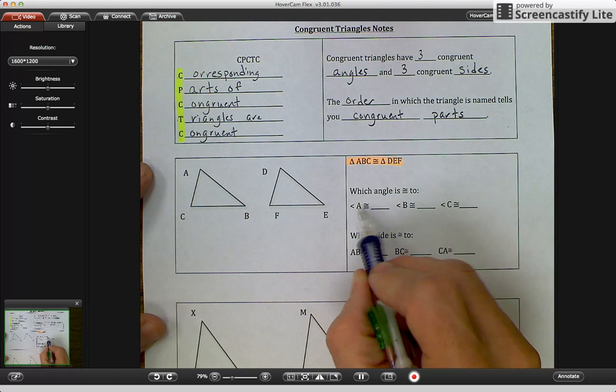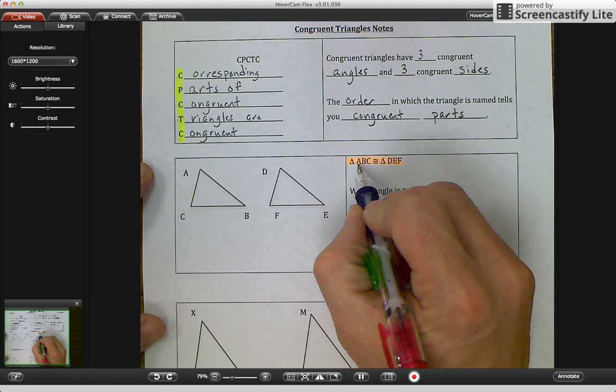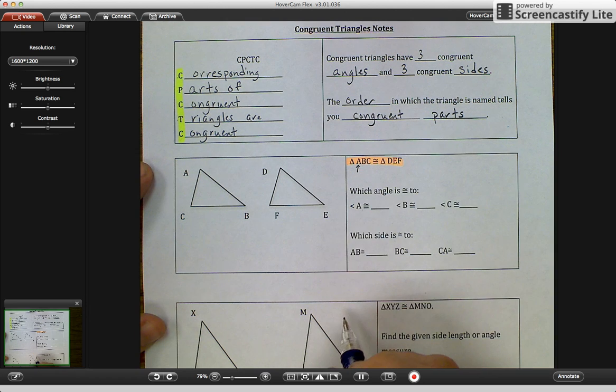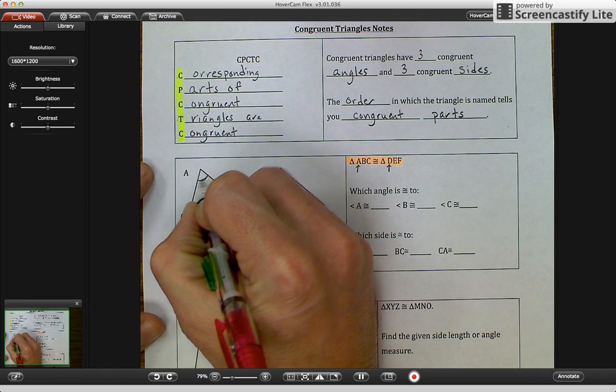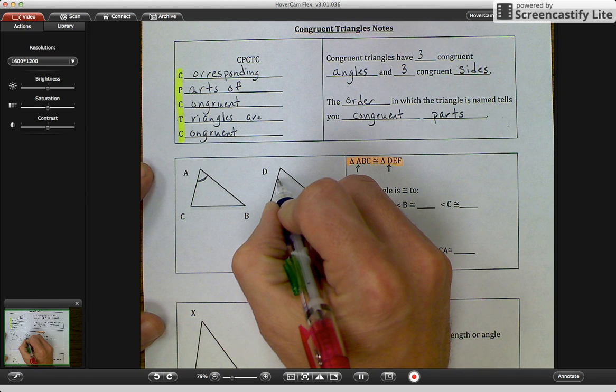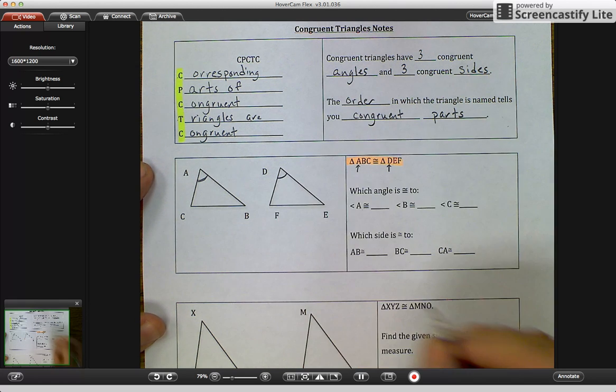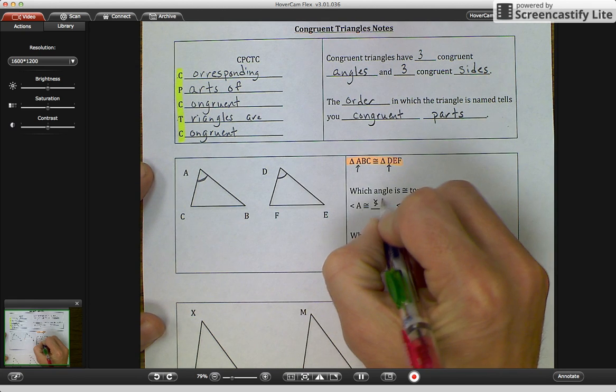So let's talk about angles. Which angle is congruent to angle A? Well, angle A is our first letter in the triangle, and angle D is the first letter in the triangle. So angle A, and I'll make one mark, is congruent to angle D. And I'll make one mark there. So angle D.